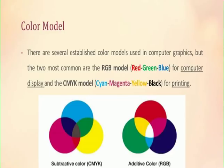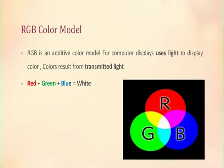Let us understand the RGB color model. The RGB color model is an additive color model used for computer displays. It uses light to display color, which is a result of transmitted light. The three main component colors of this model are red, green and blue, and by combining these colors we get white light.